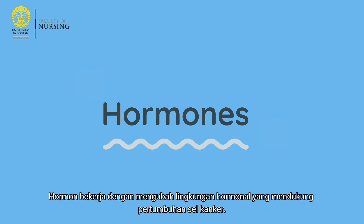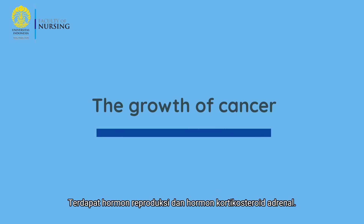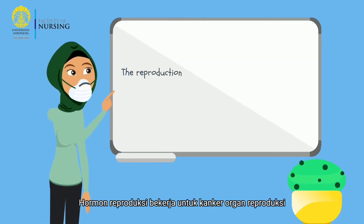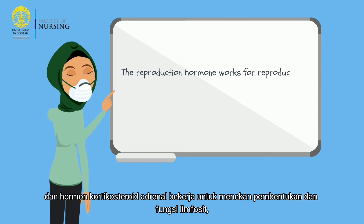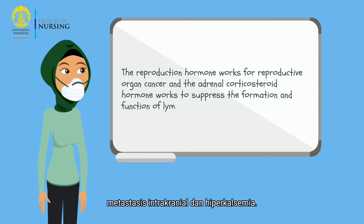Number 5: Hormones. Hormones work by changing the hormonal environment that supports the growth of cancer cells. They include reproductive hormones and adrenal corticosteroid hormones. Reproductive hormones work for reproductive organ cancers, while adrenal corticosteroid hormones suppress the formation and function of lymphocytes. These are mostly used for acute leukemia in children, malignant lymphoma, and cancer complications such as intracranial metastasis and hypercalcemia.